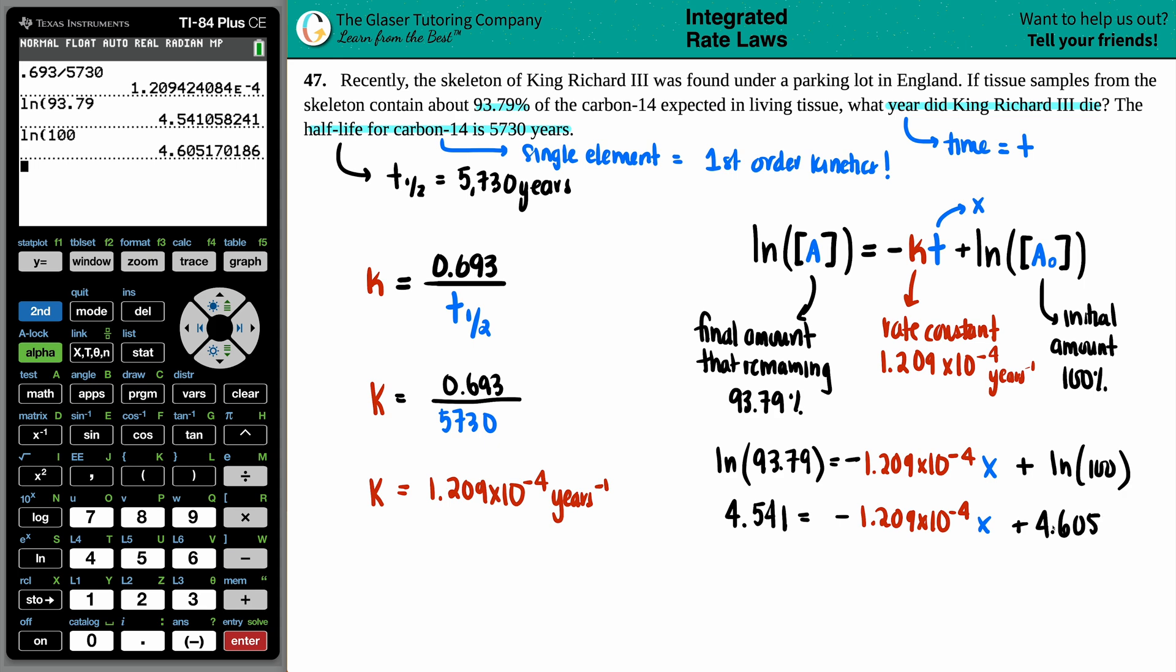Keep in mind that we want to get x by itself. So I'll subtract 4.605 from both sides. This will cancel. And I'm just going to take the full numbers here. So this minus this. We get negative 0.0641 equals negative 1.209 times 10 to the negative fourth. And this is x. So just get x by itself. Divide on both sides by negative 1.209. Oh boy. 1.209 times 10 to the negative fourth. Negative 1.209 times 10 to the negative fourth.